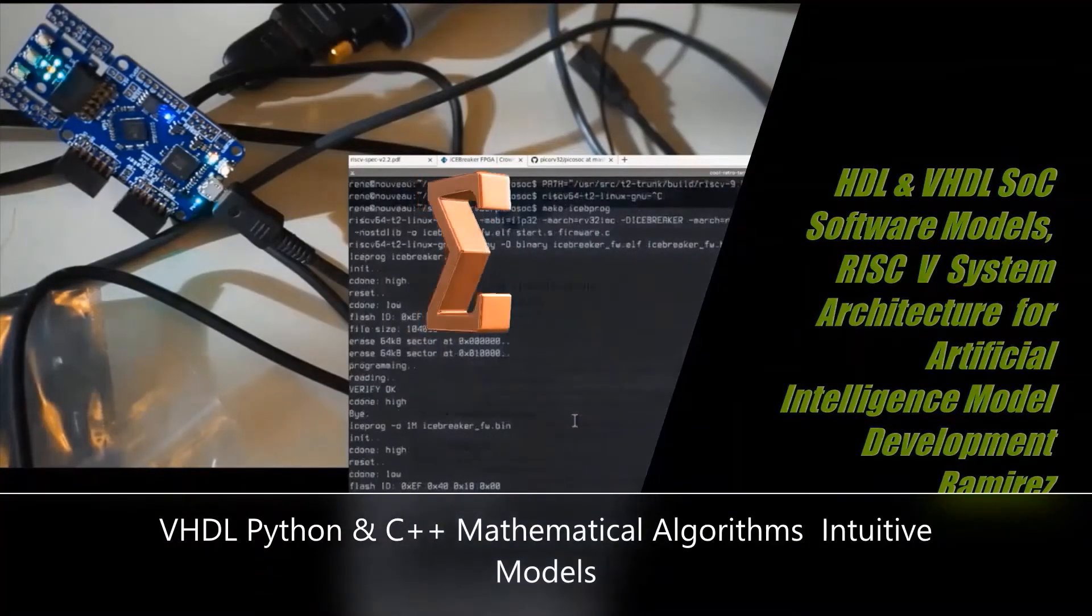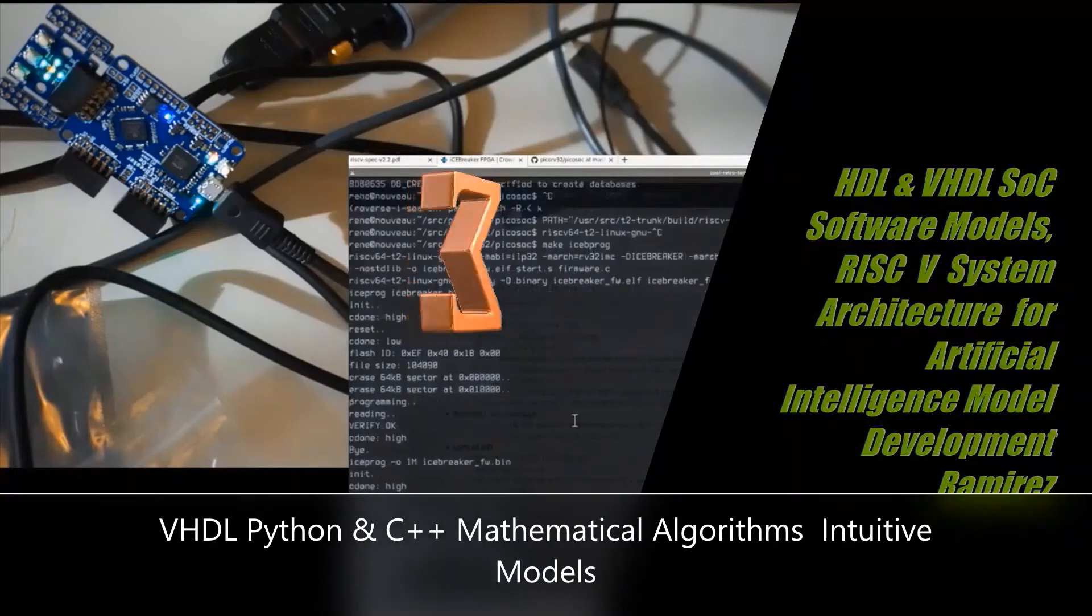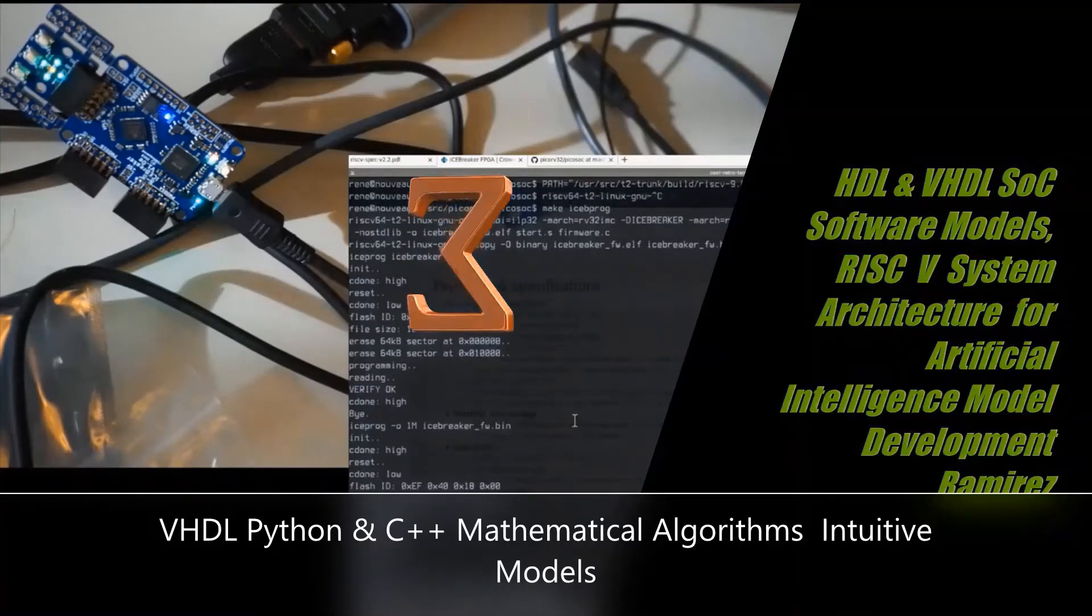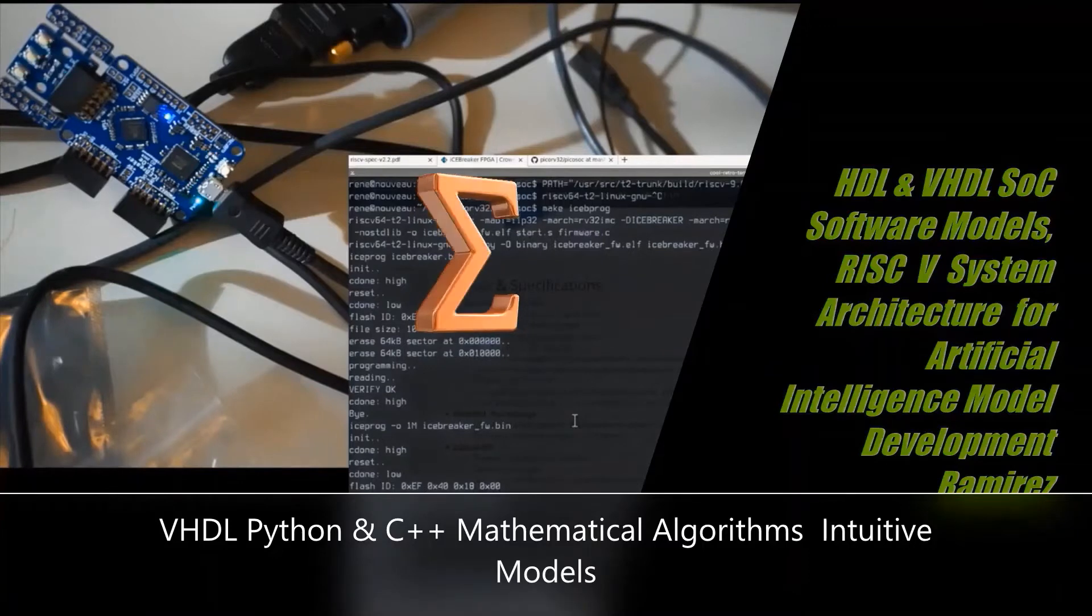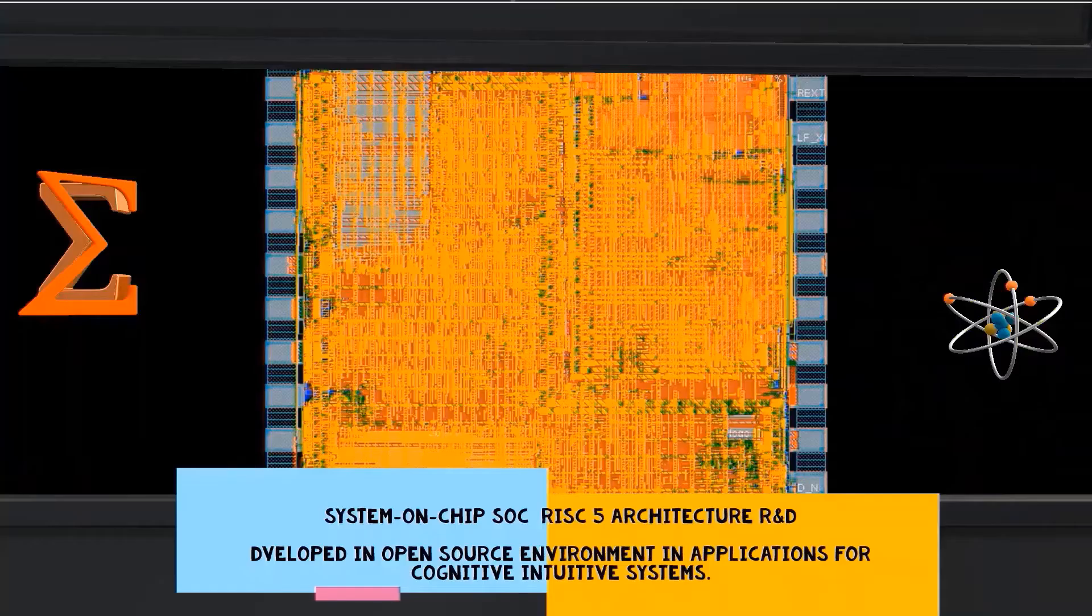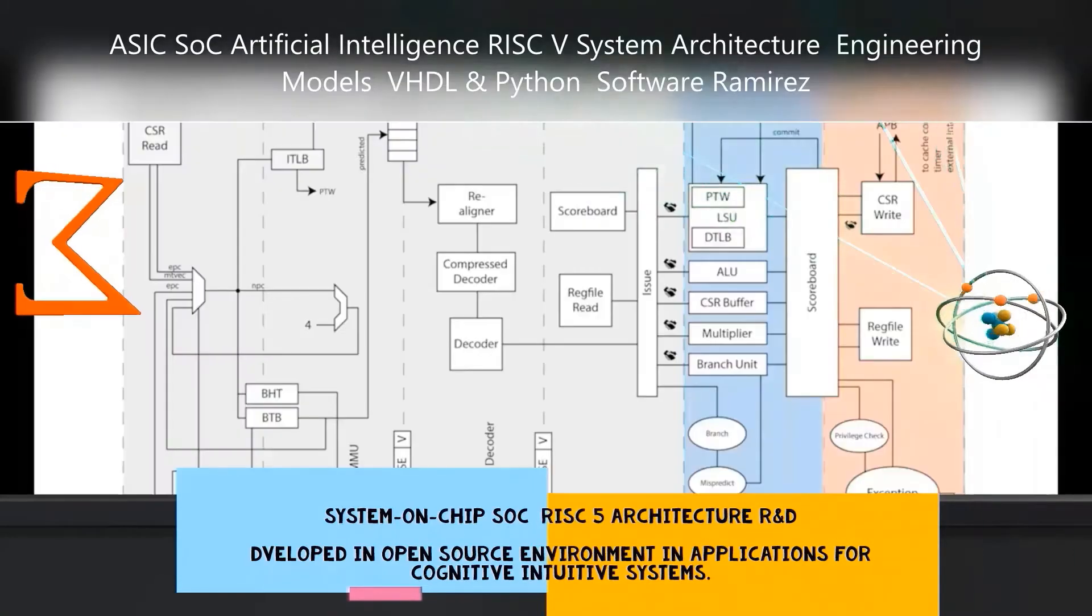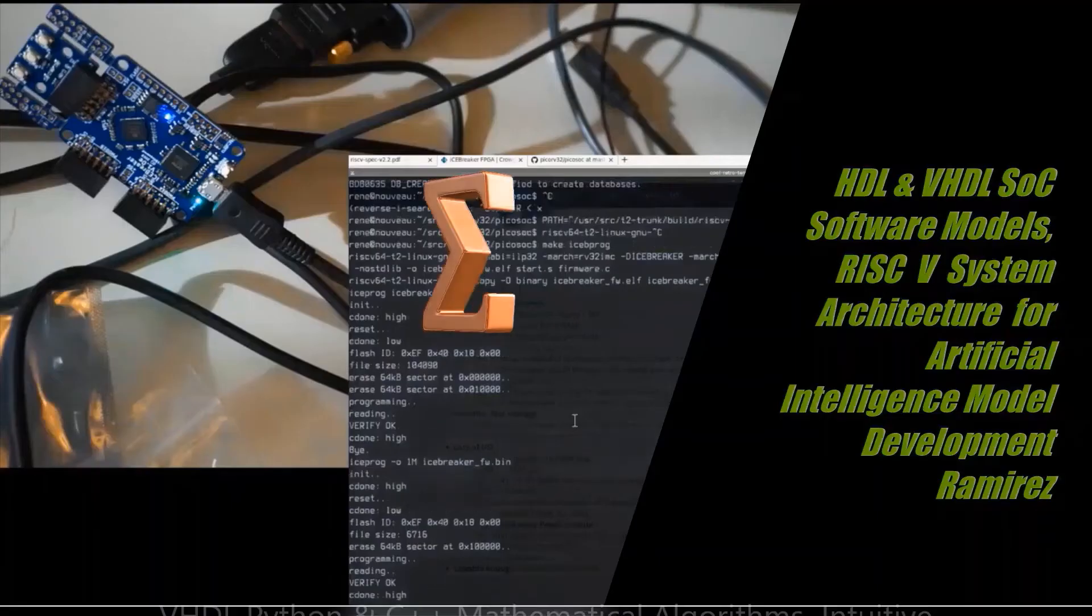Branches require the use of the arithmetic logic unit output to determine the next instruction address, which comes either from the adder where the program counter and branch offset are summed, or from an adder that increments the current program counter by 4. The thick lines interconnecting the functional units represent buses, which consist of multiple signals.